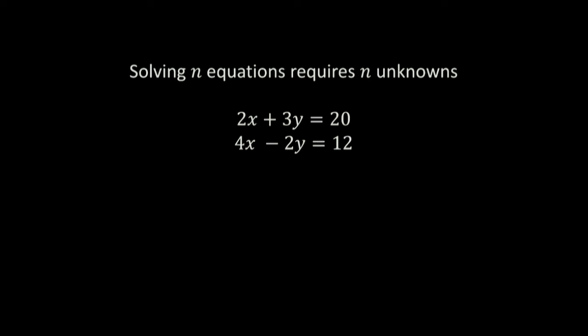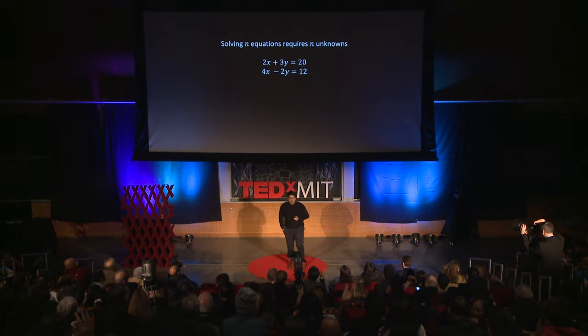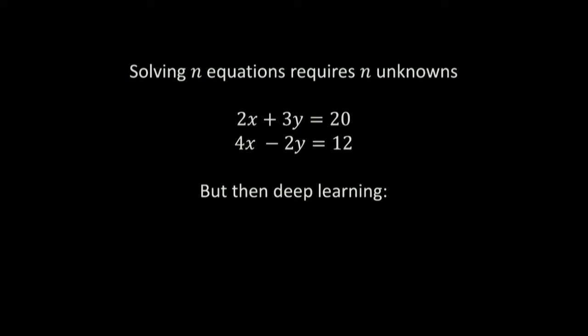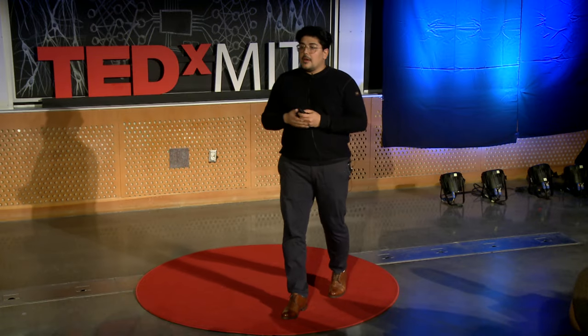Solving n equations requires n unknowns — equations like this. How many of you remember how to solve this? It's pretty easy: two equations, two unknowns. And then there is this enigmatic field coming out, deep learning, that says make the number of unknowns in these two equations excessively large so that you get to a better solution. How is that even possible? Let's look at it with a more sensible example.